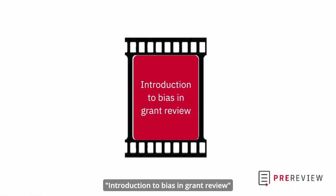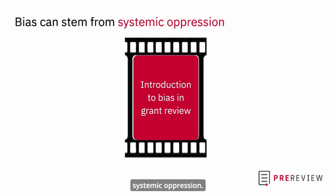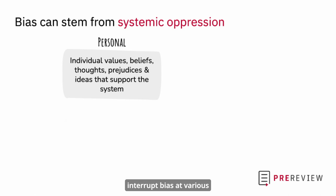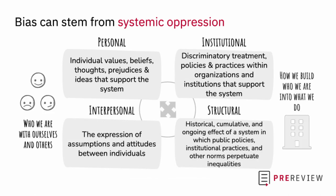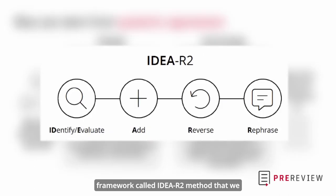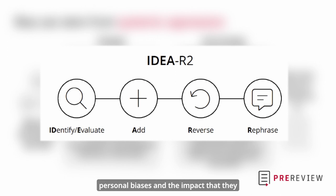In the video 'Introduction to Bias in Grant Review,' we discussed how biases can stem from systemic oppression. We also began to explore ways that we can interrupt bias at various levels within the system. Specifically, we talked about the framework called the IDR2 method that we can use to reflect on our personal biases and the impact they may have in the context of the Grant Review process.